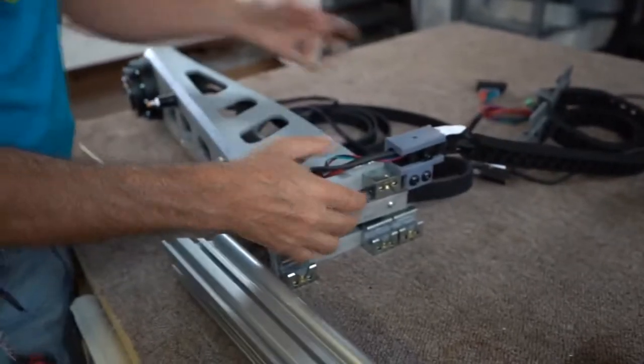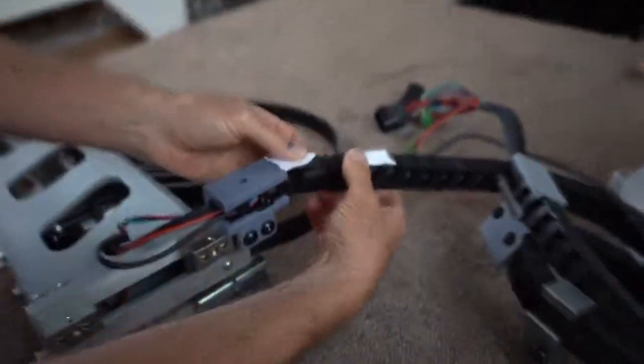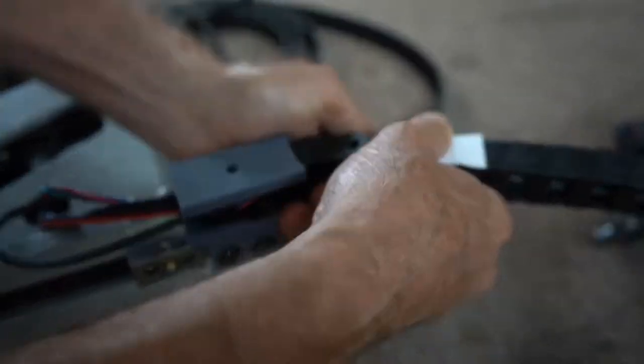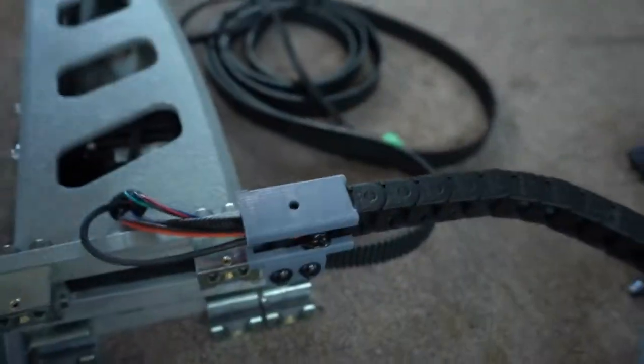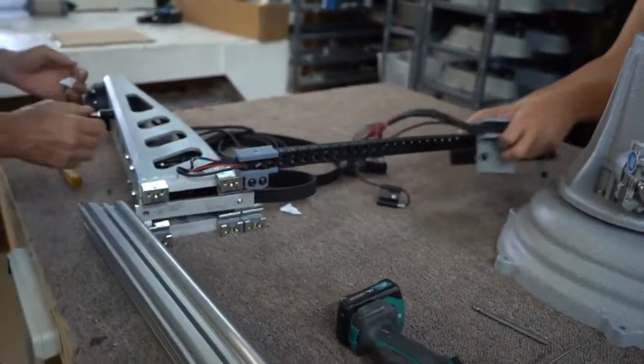After unboxing the printer, the first step is to assemble the chain together. The chain should curl in this direction after it has been assembled.